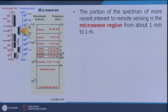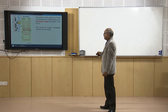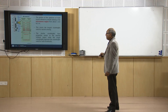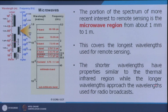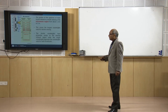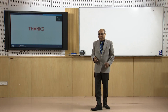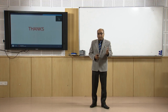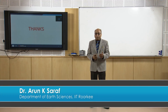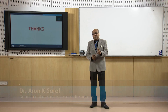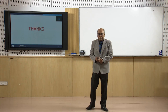Now we come to the microwave portion. The portion of the spectrum of more recent interest in remote sensing is the microwave region, from about 1 millimeter to 1 meter. This region, especially because of SAR interferometry, has become very useful and popular. It covers the longest wavelength used for remote sensing. The shorter wavelengths have properties similar to the thermal infrared region, while the longer wavelengths approach the wavelengths used for radio broadcast. This brings us to the end of the different parts of the EM spectrum — from visible, through infrared, near infrared, thermal infrared, to microwave regions. Thank you very much.